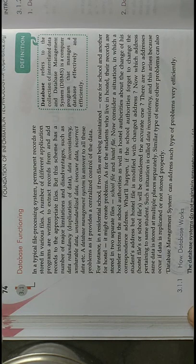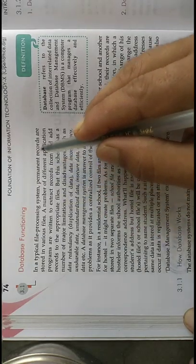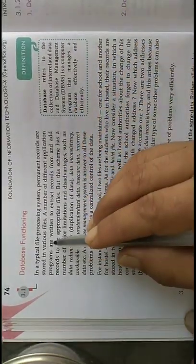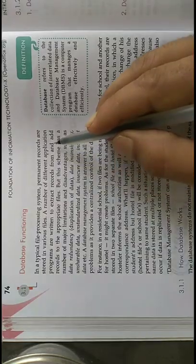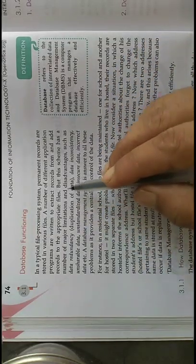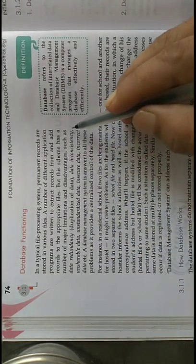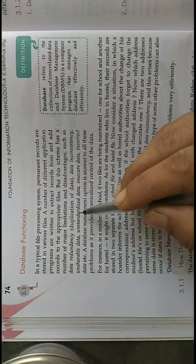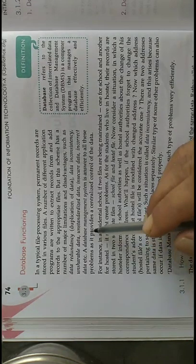In a typical file processing system, permanent records are stored in various files. A number of different application programs are written to extract records from and add records to appropriate files. This scheme has a number of major limitations and disadvantages, such as data redundancy — meaning duplication of data — data inconsistency, and data that is insecure or incorrect.